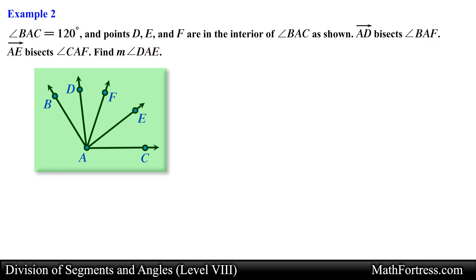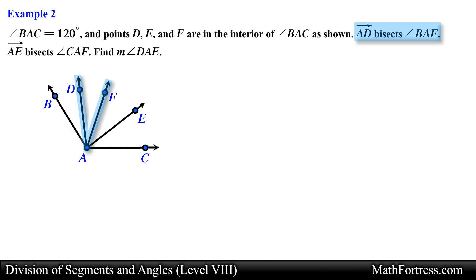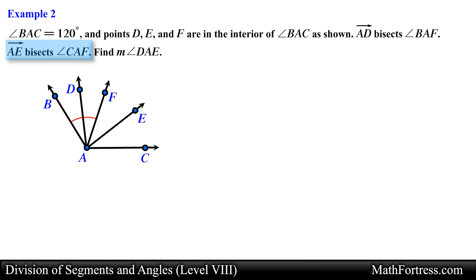Let's start solving the problem by labeling the diagram with the given information. We know that angle BAC is equal to 120 degrees. We also know that ray AD bisects angle BAF, which means that angle BAD and angle DAF are congruent, so let's mark these two angles with a single arc mark. We are also given that ray AE bisects angle CAF, which means that angle FAE is congruent to angle EAC, so let's mark these two angles with double arc marks.